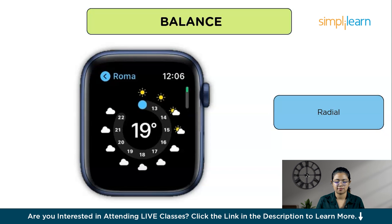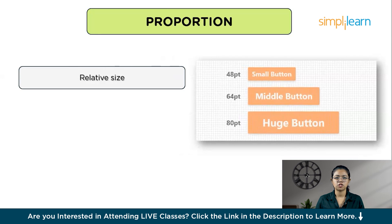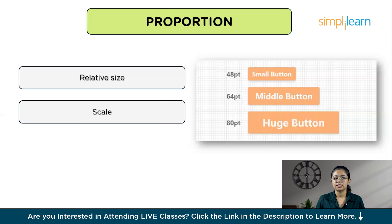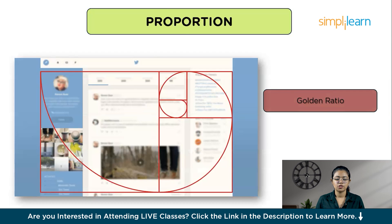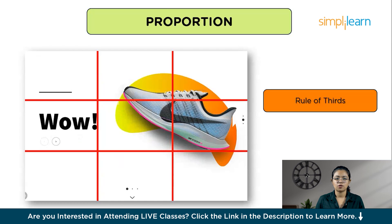Proportion in composition refers to the relationship and size between different elements in a design — how big or small elements are in relation to each other and to the overall layout. Proper proportion helps make the design pleasing and easy to navigate. Key principles include relative size (e.g., a headline larger than body text indicates importance), scale (elements should fit within the layout without feeling cramped or too sparse), and hierarchy (larger elements like titles or main images should stand out, while smaller elements like captions support primary content). Tips for good proportion include using the golden ratio, the rule of thirds (dividing the layout into thirds both horizontally and vertically and placing important elements along these lines or at their intersections), and maintaining consistent ratios for similar elements.